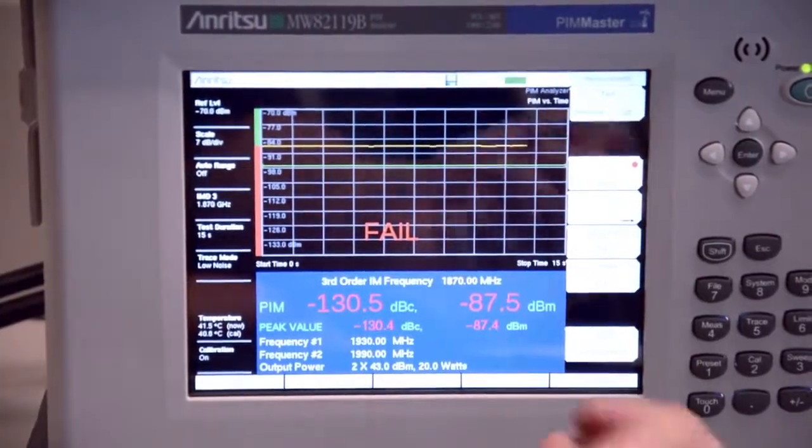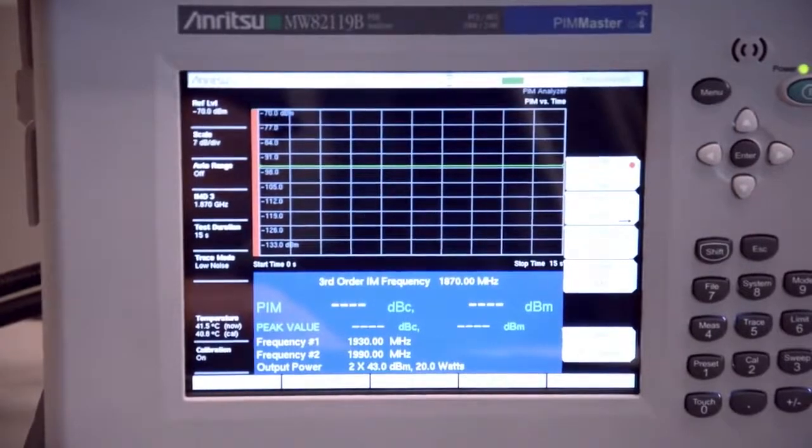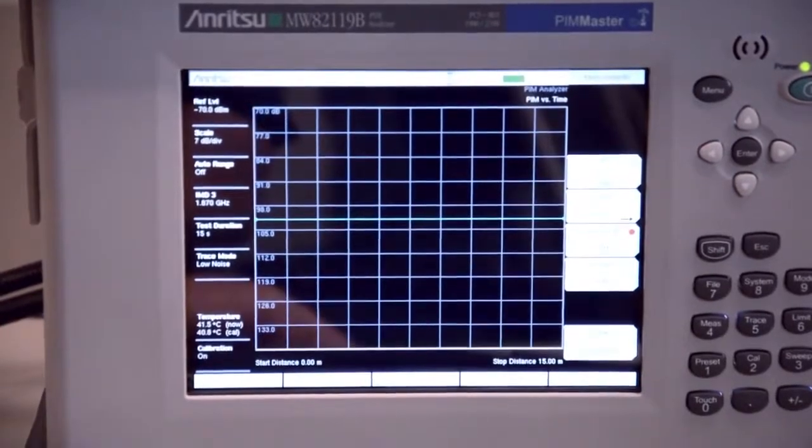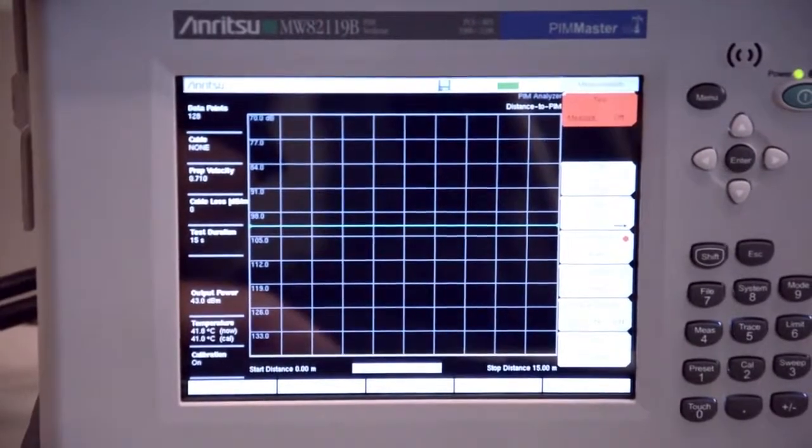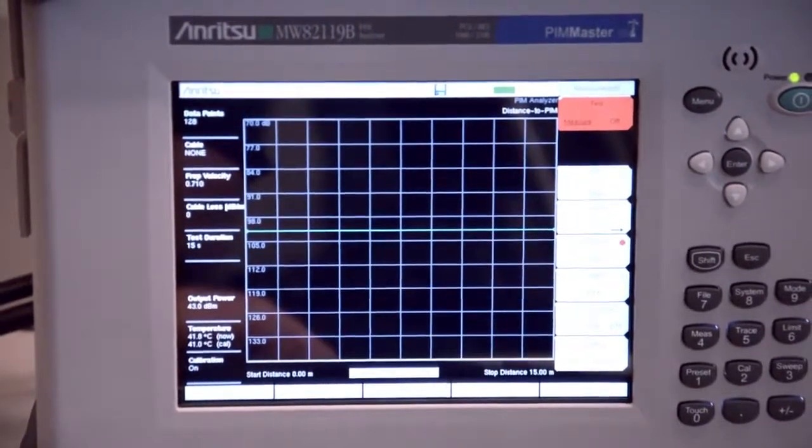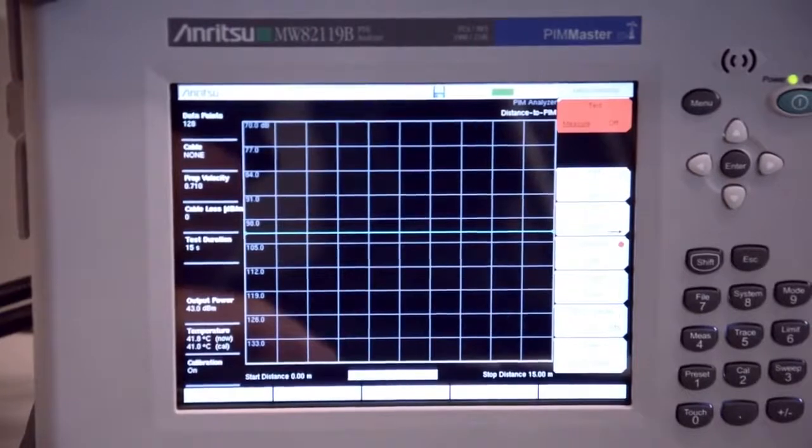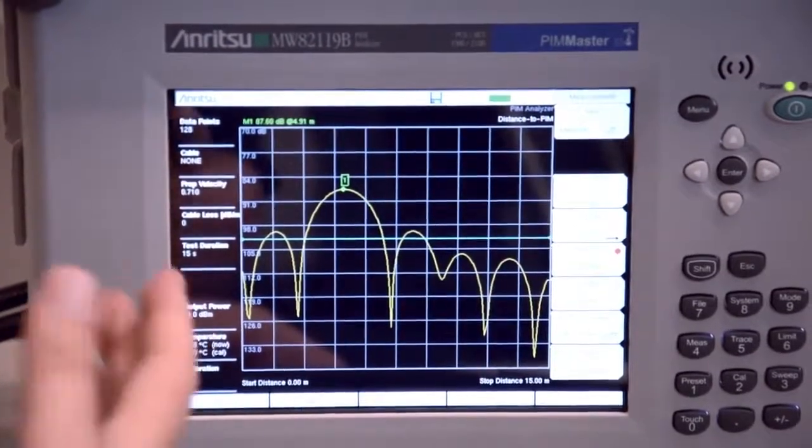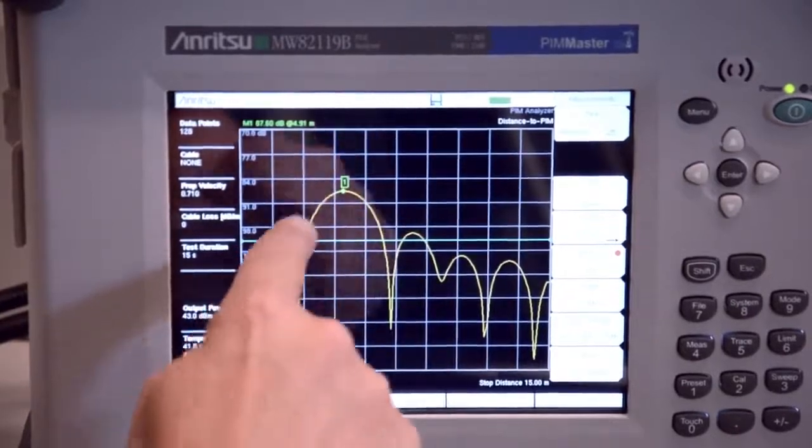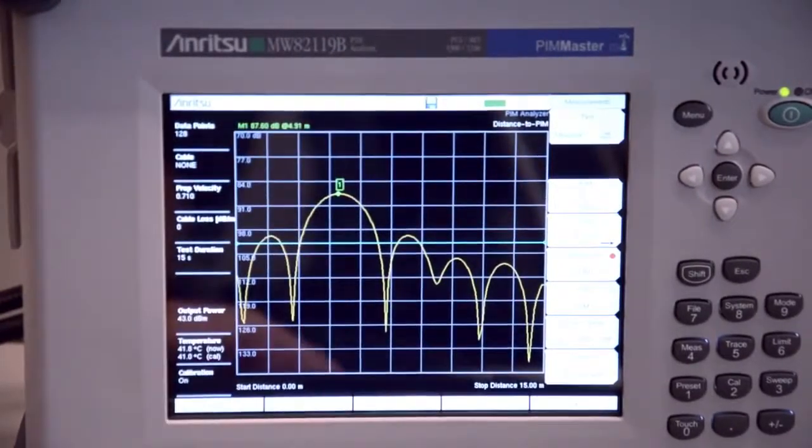But with distance to PIM technology, with a single button push, we can now go into a mode that tells us the location of where the PIM problem is located. So with just a few seconds, we have an answer. In this case, it's telling me that I see a high PIM peak at a distance of 4.91 meters.